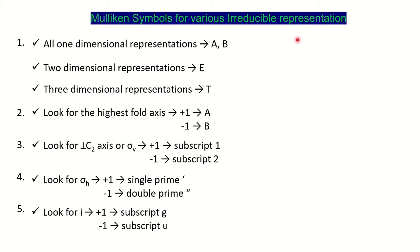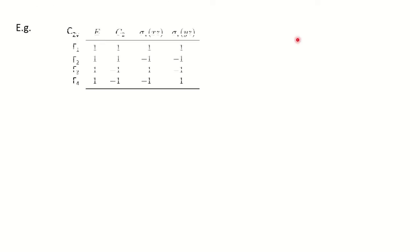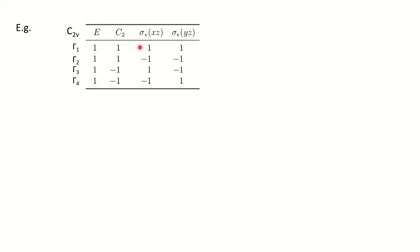So you have to learn these steps to find out the Mulliken symbols for the various irreducible representations for the respective character tables. We'll see one example. Let's say we are talking about the C2v point group. For C2v, 2n symmetry operations are there — n is two here — so total four operations: E, C2, sigma v(xz), and sigma v(yz). For that we have four irreducible representations. Based on the rule, since all characters are one-dimensional, we will give symbol A or B.